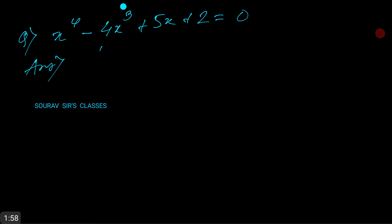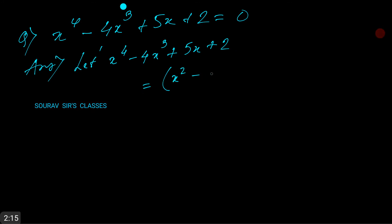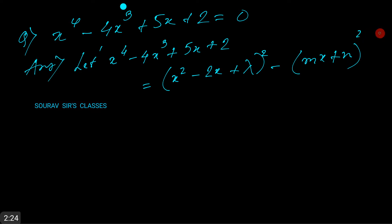So let us begin again clearly. Let x⁴ - 4x³ + 5x + 2 equal (x² - 2x + λ)² minus (mx + n)².